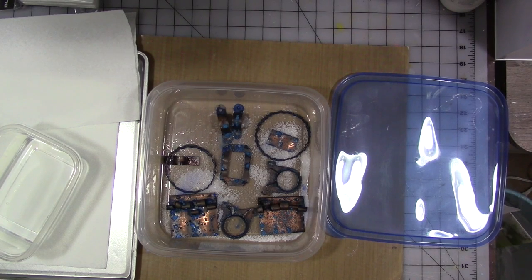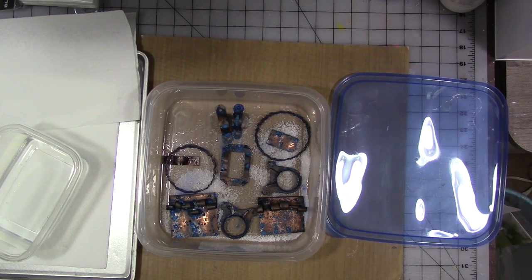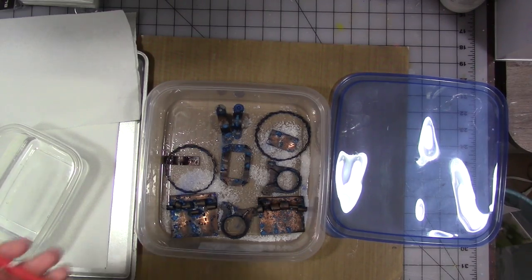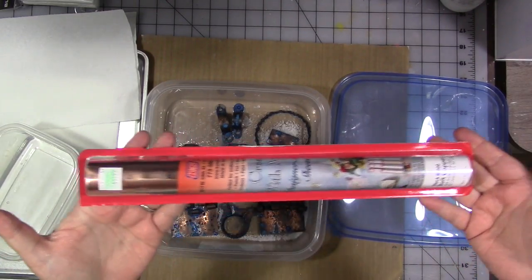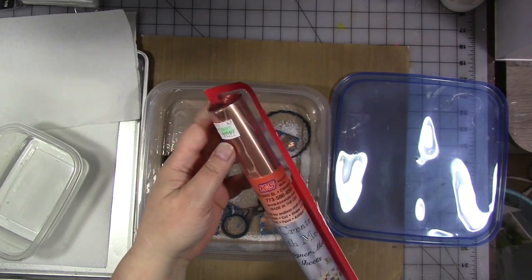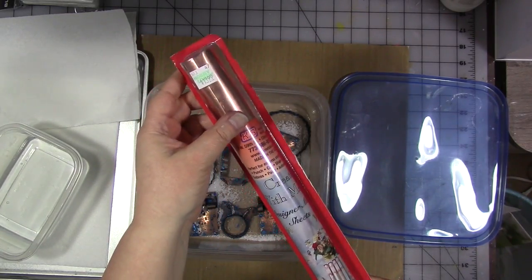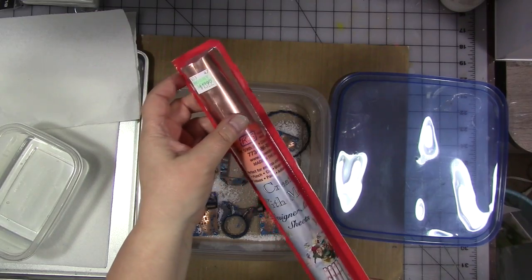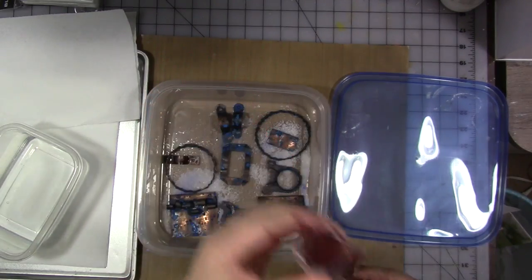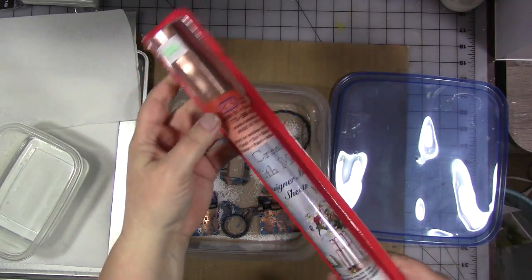So the copper comes in a roll like this, and this is from Hobby Lobby. It was $13.99 for a roll. It is 36 gauge and it is 12 inches by 30 inches. There's a lot on here. I used a coupon of course. Use a coupon, don't pay full price.